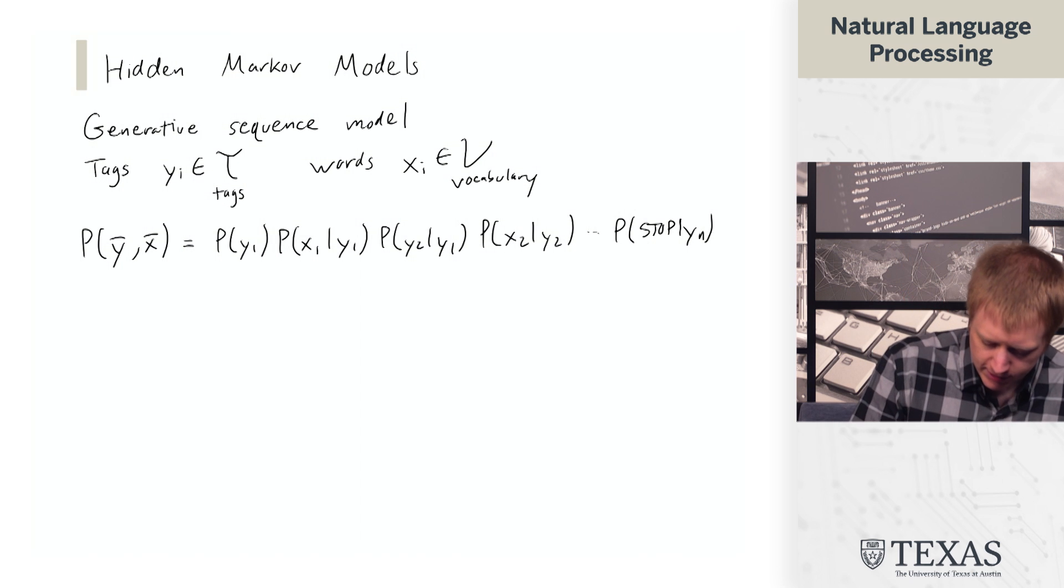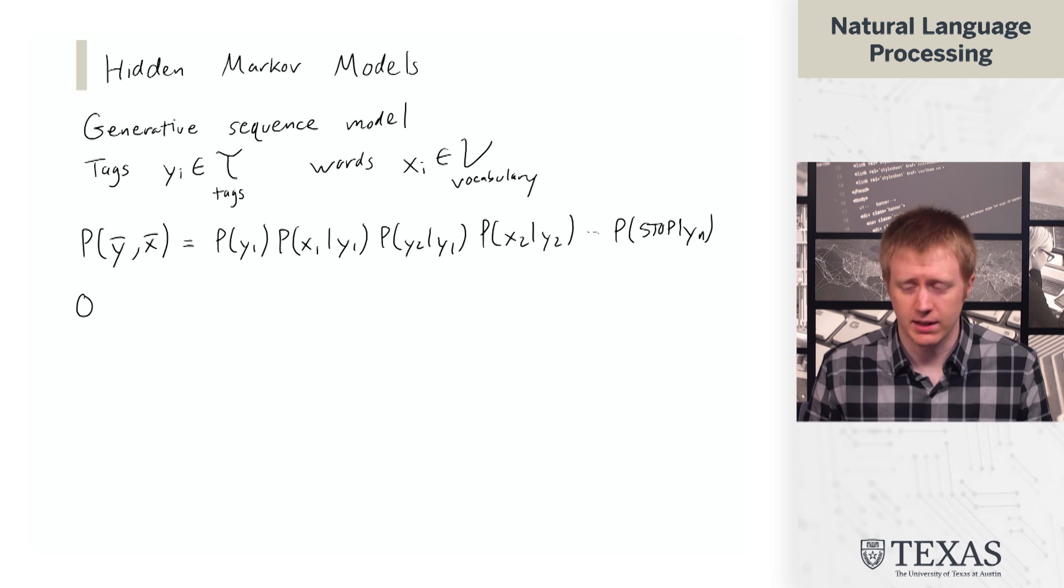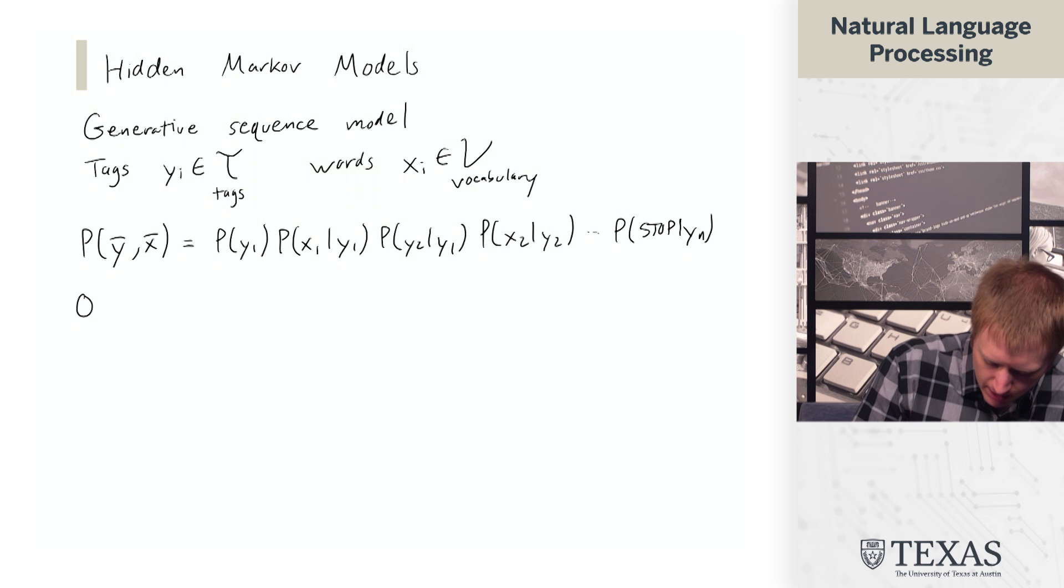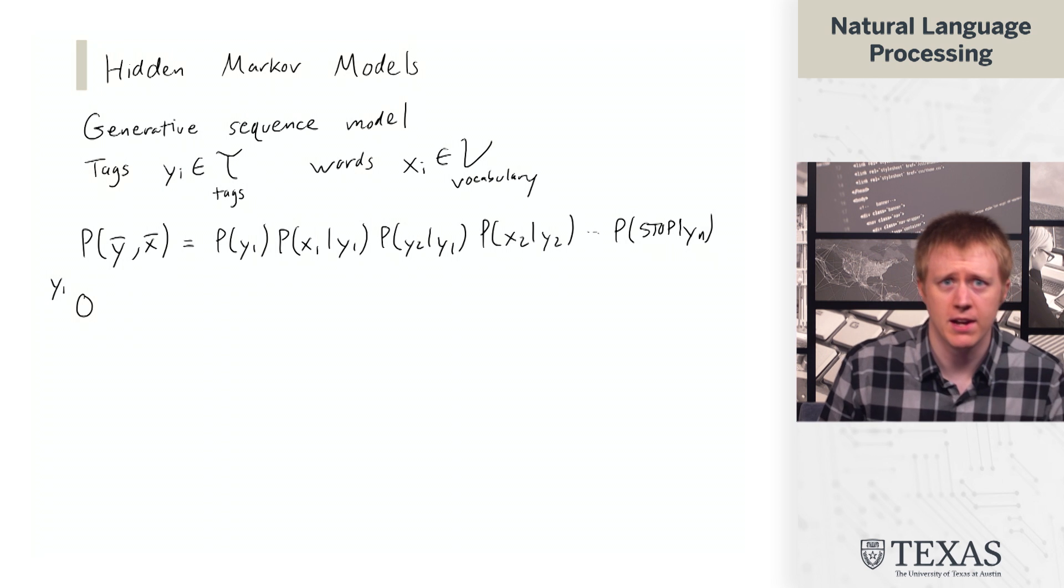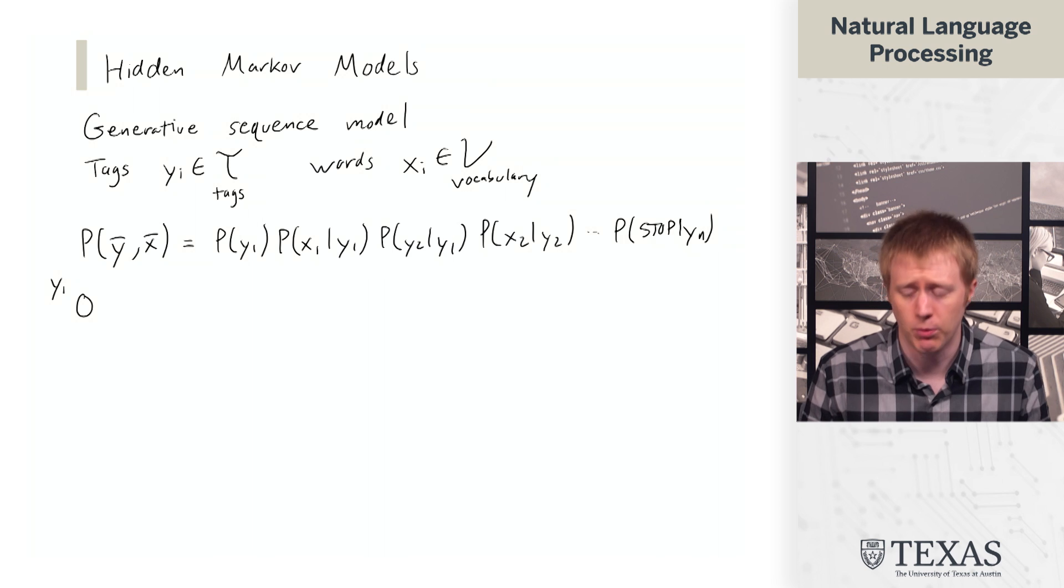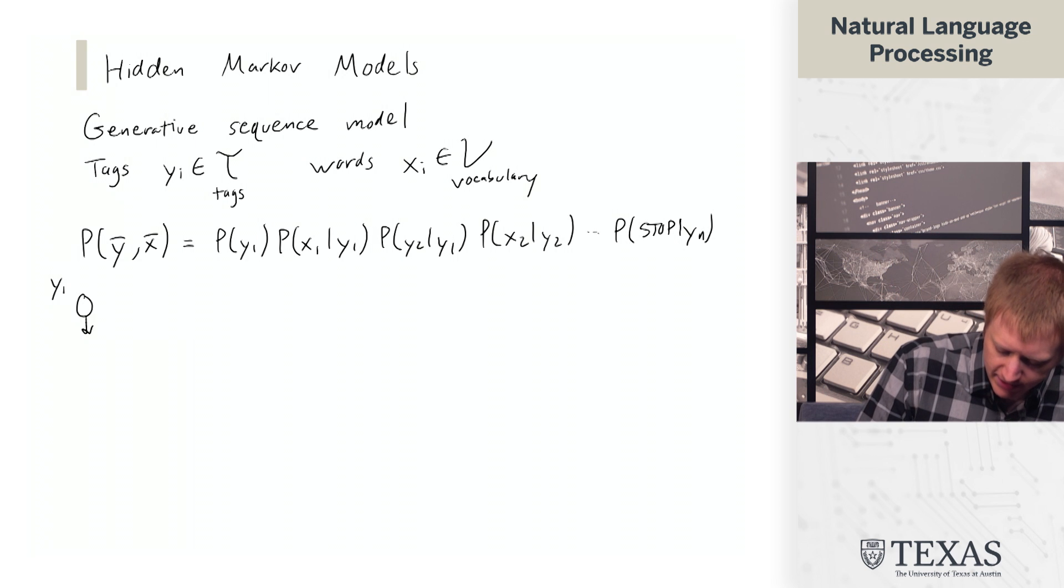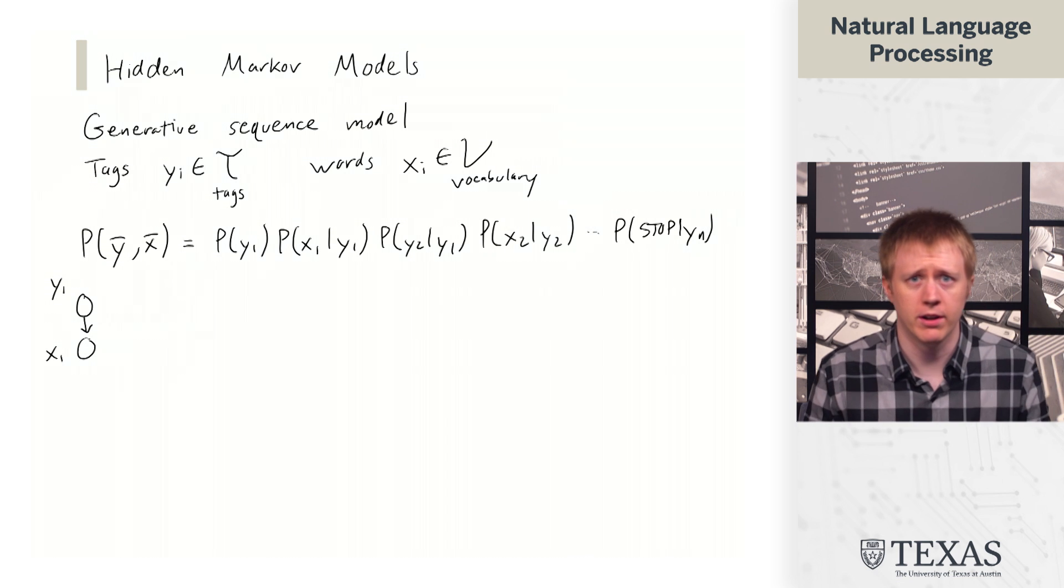So let's look at this graphically using Bayes net notation. So we start off by sampling a tag, y1. And then based on that tag, we sample a word, x1. So when we decompose the probability in this particular way,